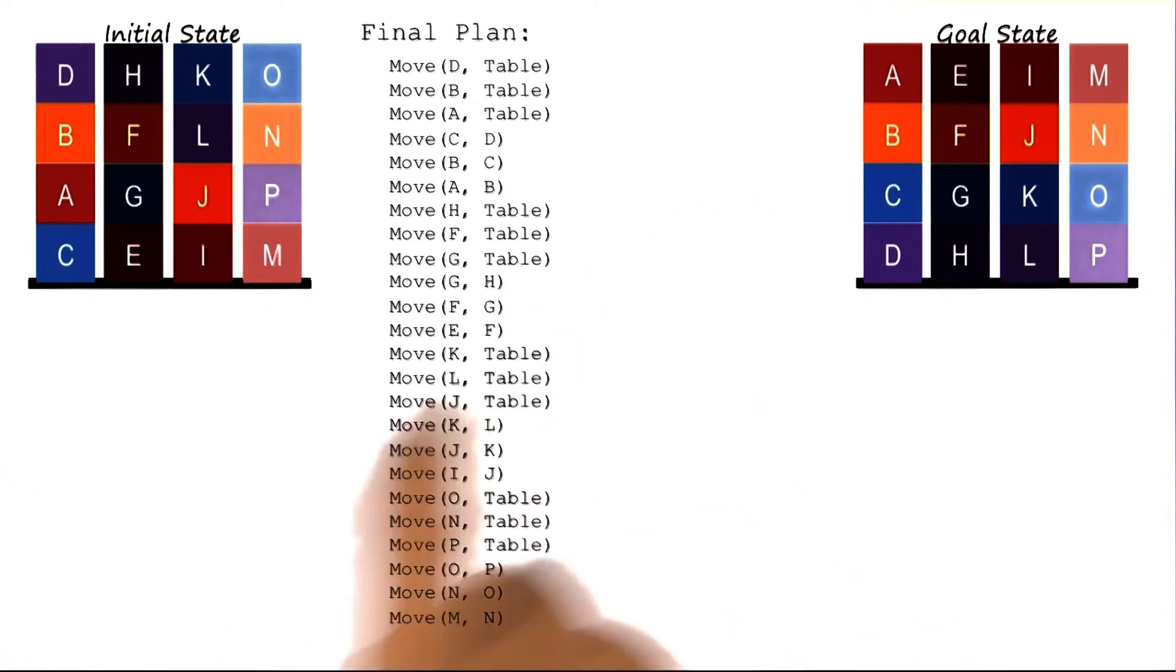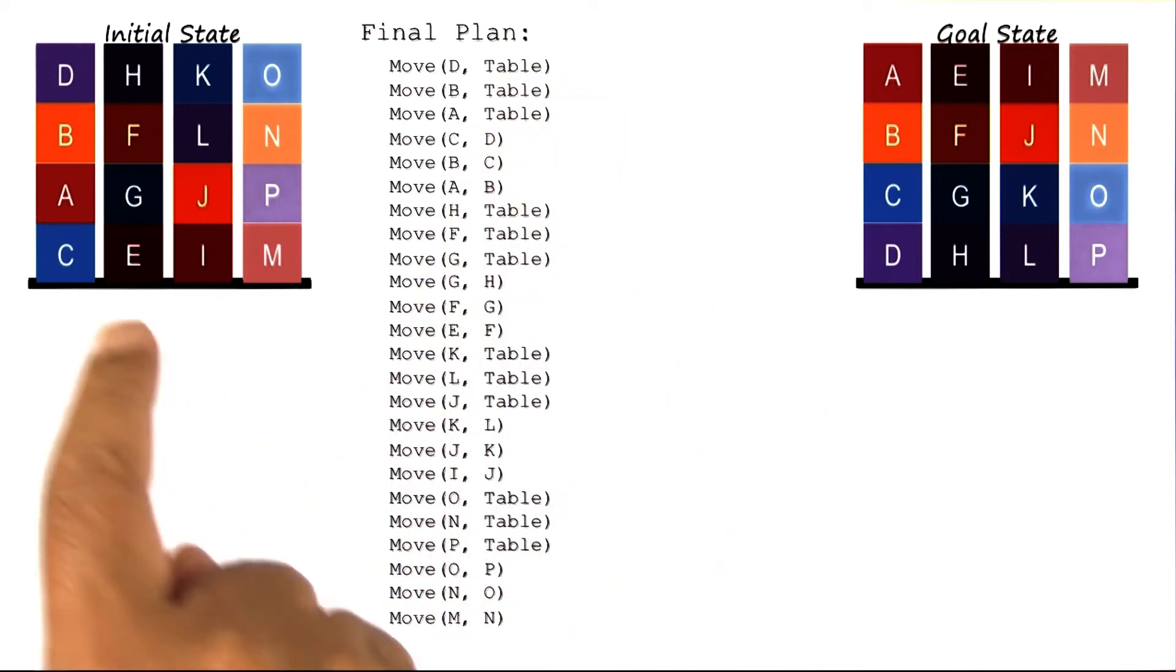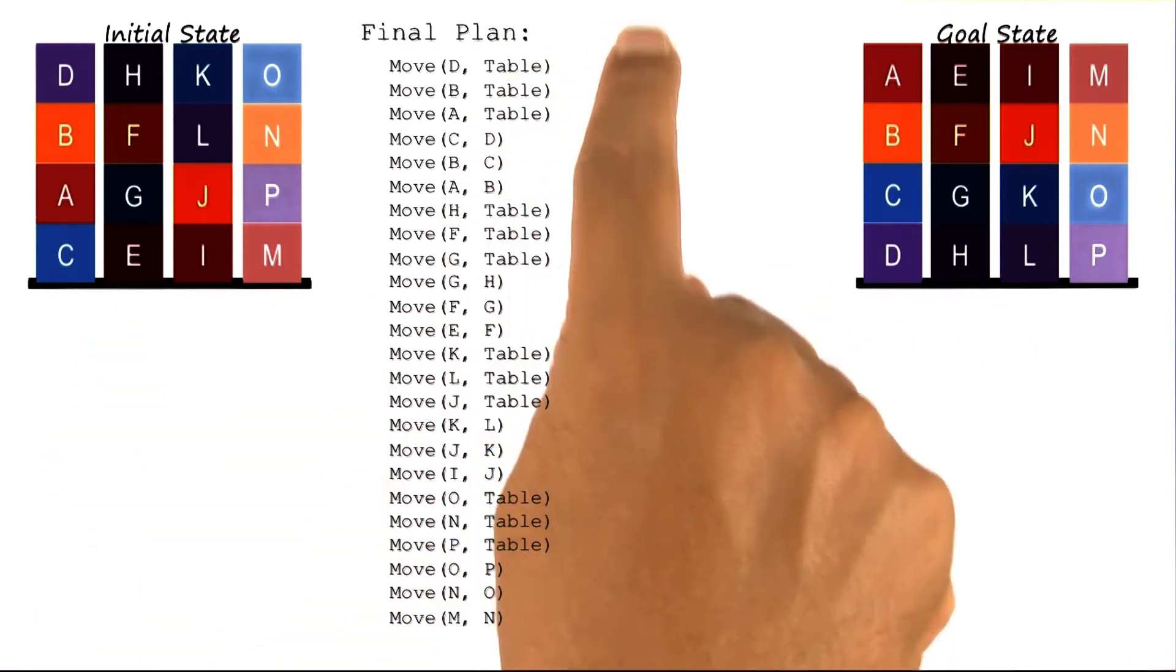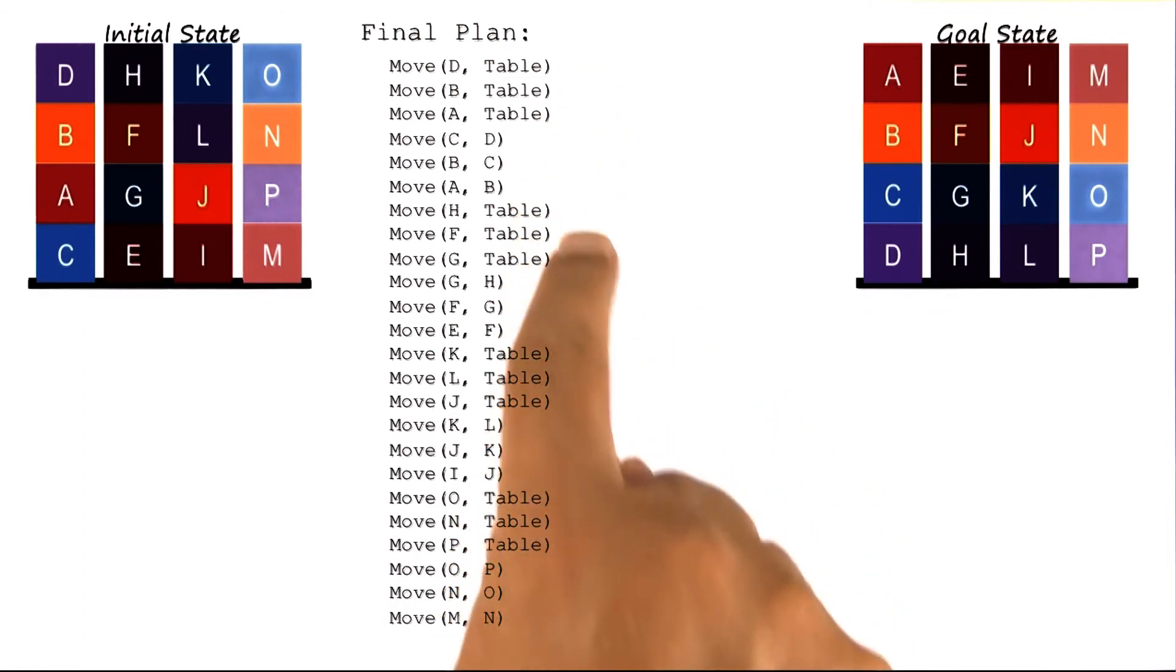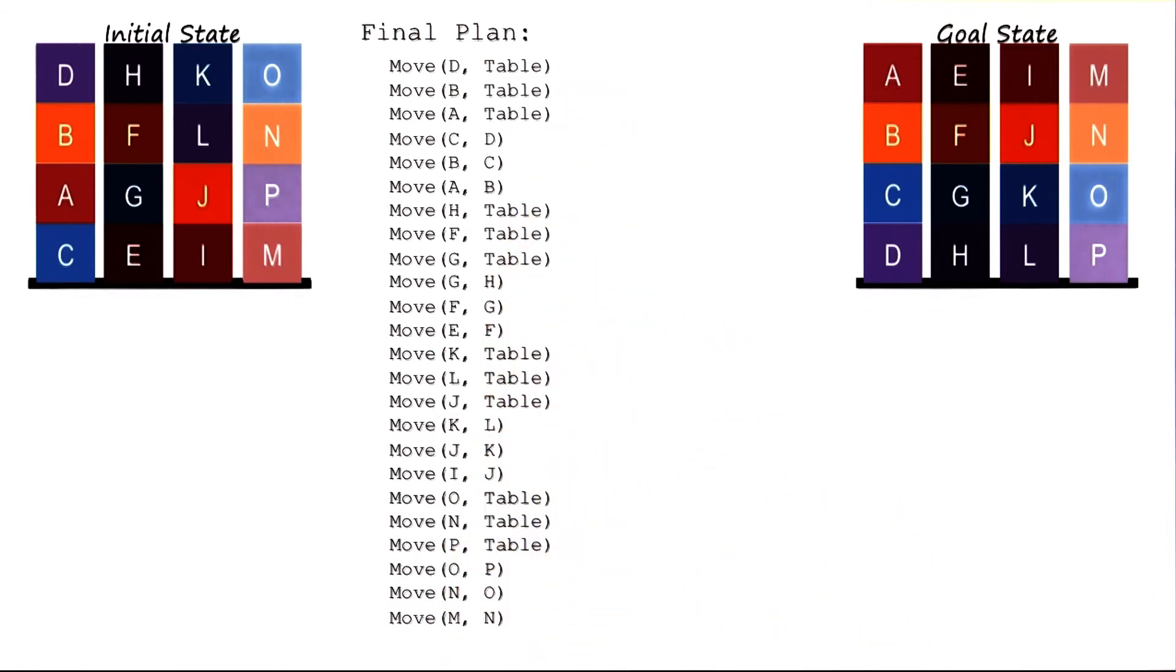As previously, we can use partial order planning to come up with a plan to go from this initial state to the goal state. Here is the final plan. As you can see, it's pretty long and complicated with a large number of operations.